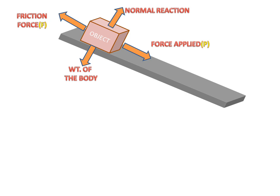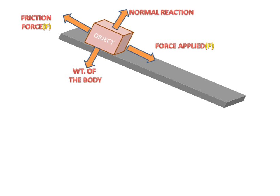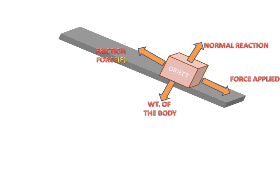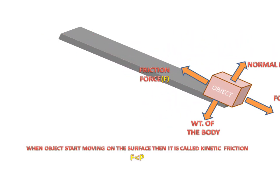Now third, when object will move, when object start moving on the surface then it is called kinetic friction. Means our applied force will be greater than the friction force. Our applied force will be greater than the friction force. So these are the types of the friction.